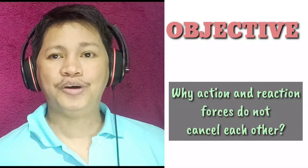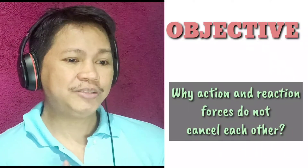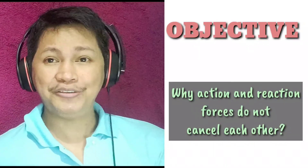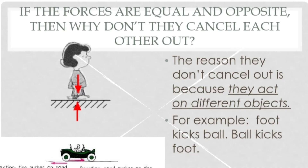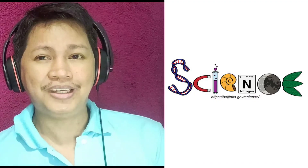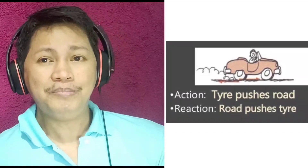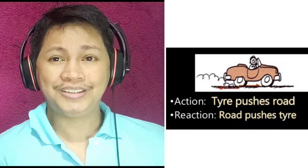One of the objectives of the lesson is to explain why action and reaction forces do not cancel each other. The reason they don't cancel out is because they act on different objects. For example, a foot kicks a ball and the ball kicks the foot. Another example: the tire pushes the road and the road pushes the tire. Because they act on different bodies, they do not cancel each other out.